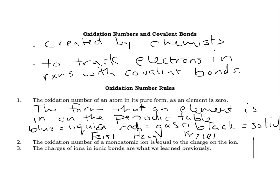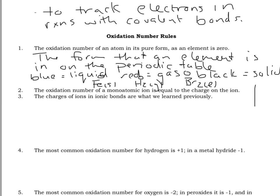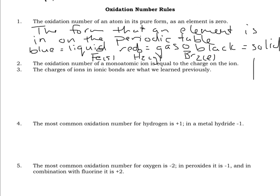What you've previously learned about ions is still true for charges and ionization energies. When assigning oxidation numbers for ionic compounds, the charges of the ions in the ionic bond are what we've learned previously. Monoatomic ions have a charge on them, and their oxidation number is simply that value. For example, if you have Cl⁻, the oxidation number is just minus one.